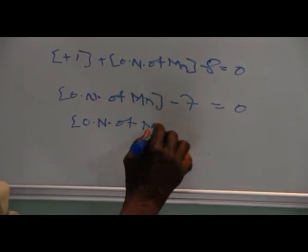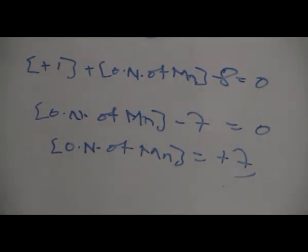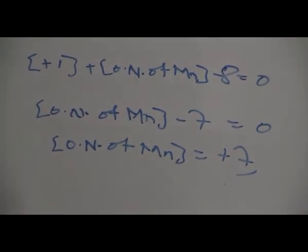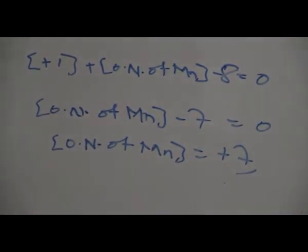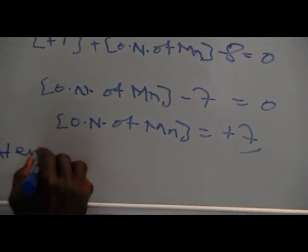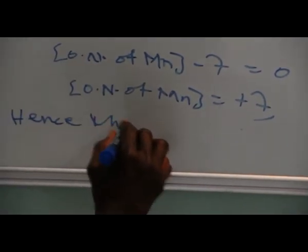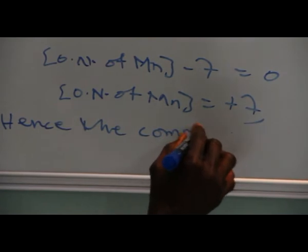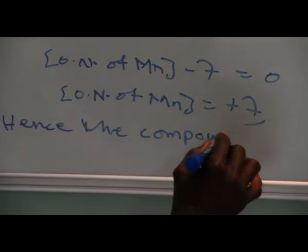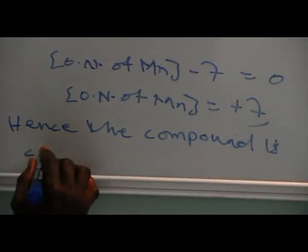Oxidation number of manganese equals seven. Hence this compound is called potassium tetraoxomanganate. Hence the compound is called potassium permanganate.